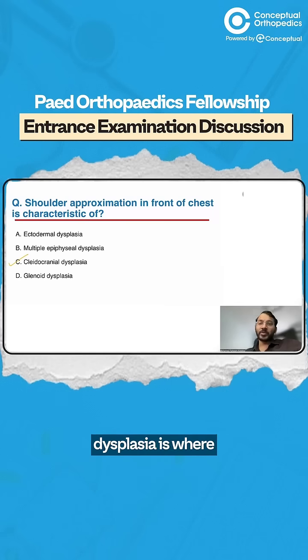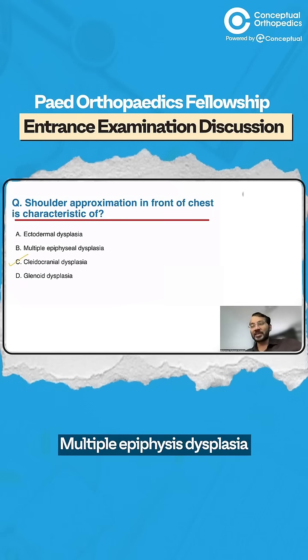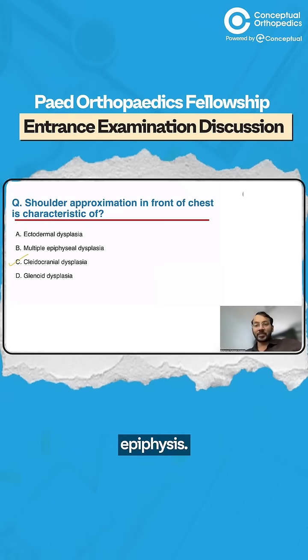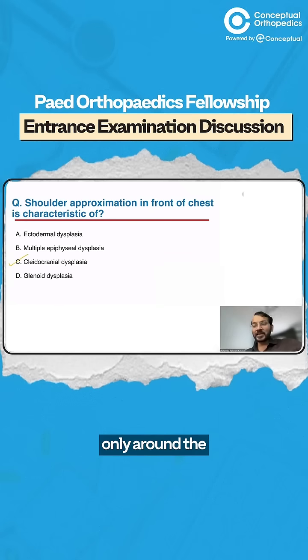Ectodermal dysplasia is where the skin is also involved. Multiple epiphyseal dysplasia has multiple joints involved with erratic ossification of the epiphysis. Glenoid dysplasia is only around the glenoid.